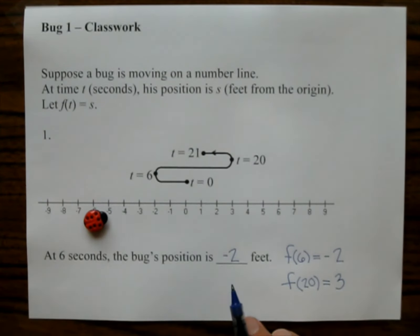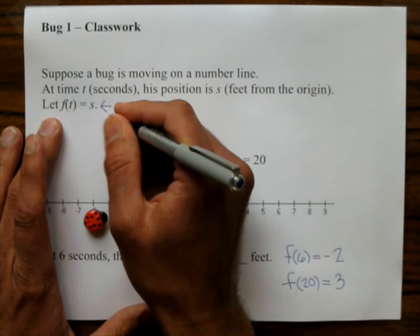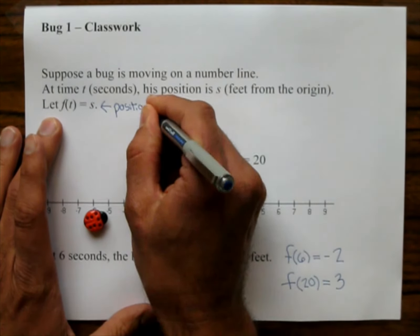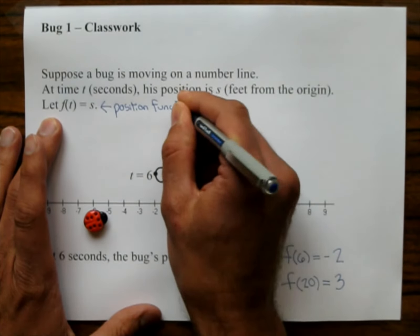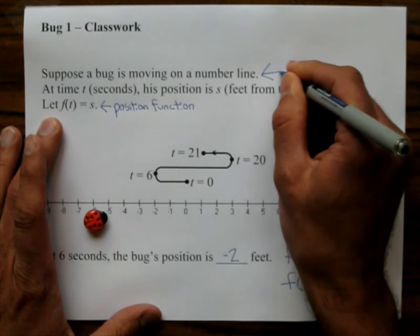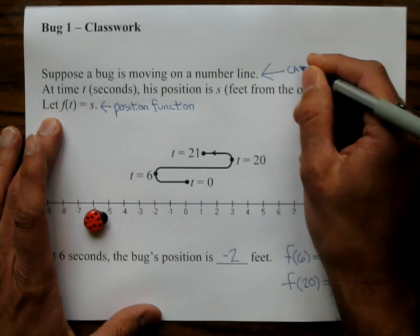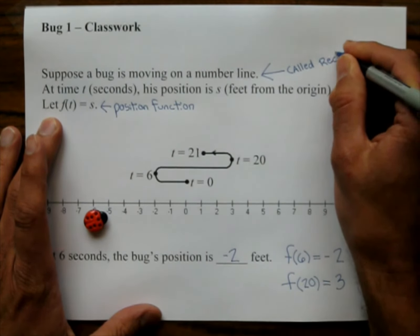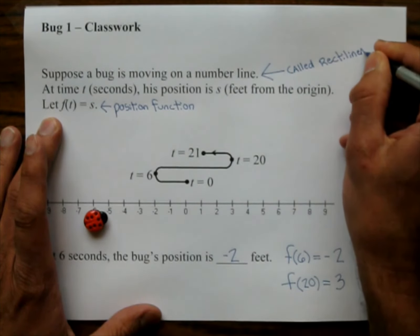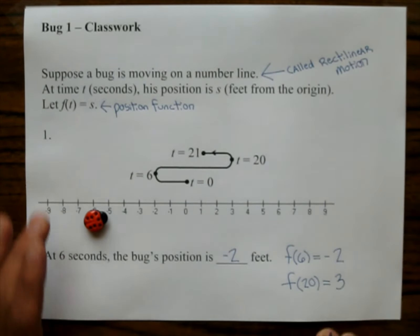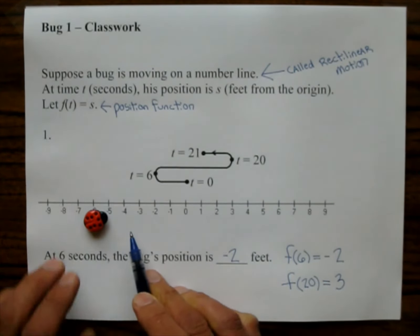This function right here, we'll refer to this as the position function. This whole description of the bug moving on a number line. In calculus books, sometimes you'll see it being called rectilinear motion.